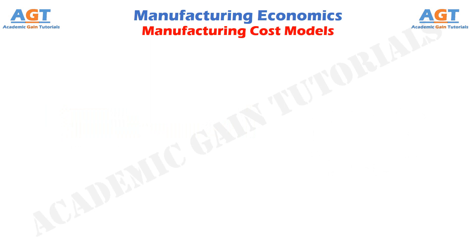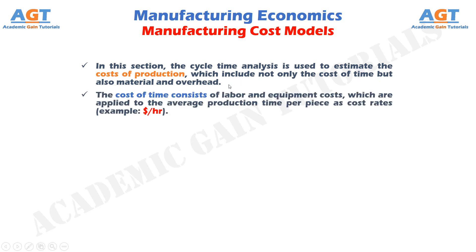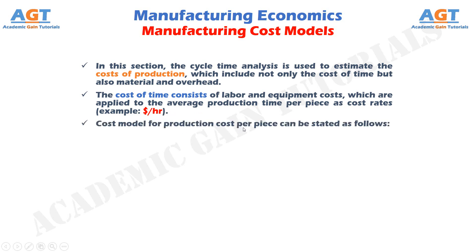Manufacturing cost models. In this section, cycle time analysis is used to estimate the costs of production, which include not only the cost of time but also material and overhead. The cost of time consists of labor and equipment costs, which are applied to the average production time per piece as cost rates — for example, dollars per hour. Thus, our cost model for production cost per piece can be stated as follows.